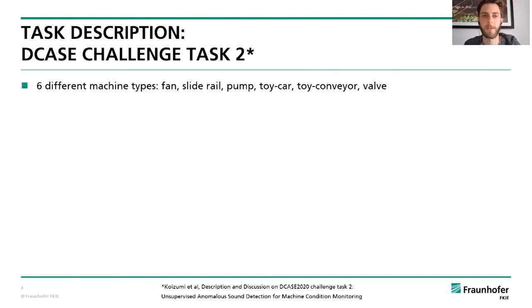I will first start with the task description, which is basically a recapitulation of DCASE's challenge task 2. The task consists of audio files belonging to six different machine types: fan, slide rail, pump, toy car, toy conveyor, and valve.